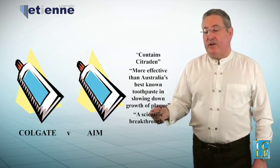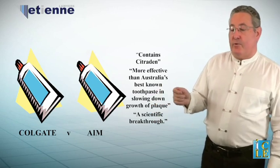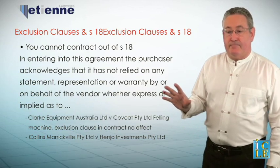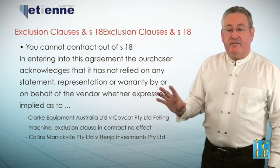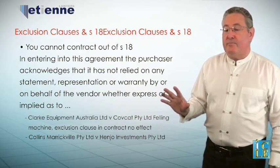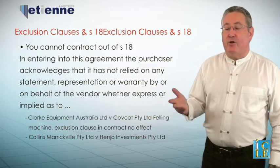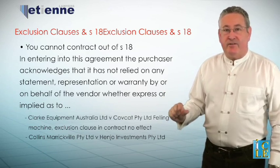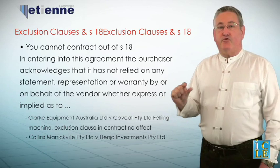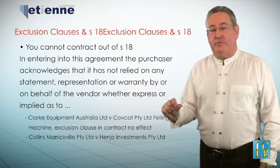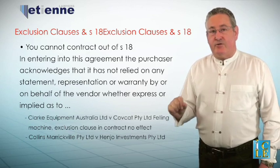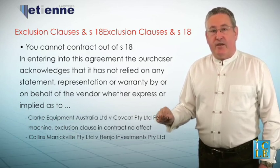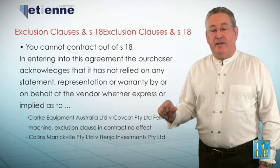As indicated earlier, if you start to make scientific allegations, these claims must be objectively substantiated. It is dangerous to make an objective scientific claim if you do not have objective independent scientific proof — Colgate-Palmolive Pty Ltd v Rexona [1981] Australian Trade Practice Report 40242. Exclusion clauses and section 18: in numerous cases — Clark Equipment Australia Ltd v Covatt Pty Ltd; Hengeco v Collins Marrickville Pty Ltd — exclusion clauses are not outlawed by section 18. A properly drafted exclusion clause is still permissible, provided it goes to a contractual matter, not a misleading and deceptive matter, which cannot be excluded because of its strict liability nature.